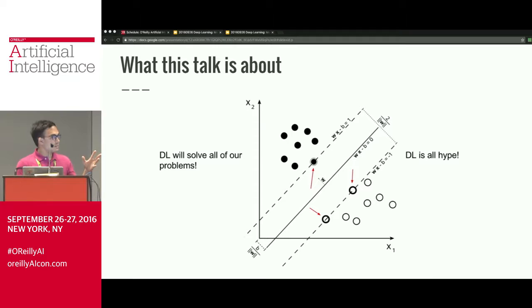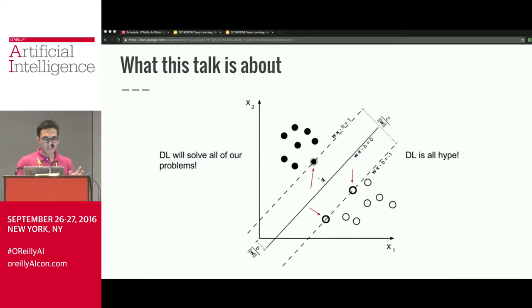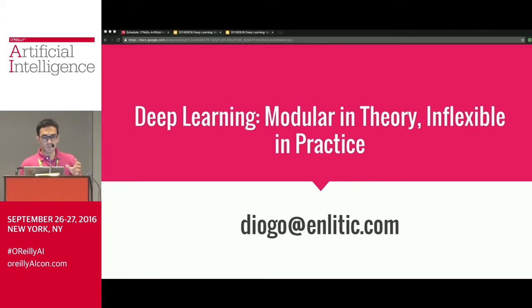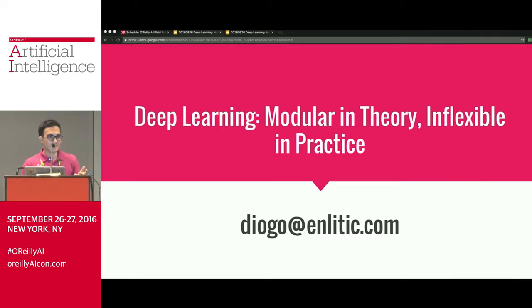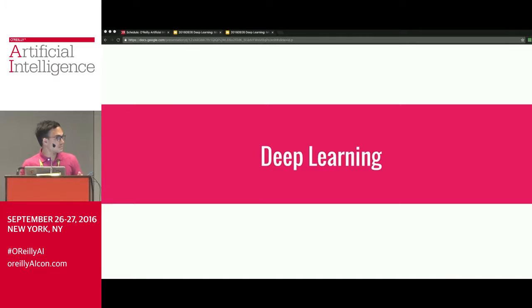I don't want to focus on the deep learning slam dunks all the way to the left or the impossible tasks on the right, but more on the evidence closest to the boundaries of showing what our current capabilities are — because that's where the interesting problems lie. By understanding just this subset of the field, you can have a pretty good approximation of how the rest of the space looks. Since most people I interact with are in the 'deep learning will solve everything' camp, I've made my talk 'deep learning: modular in theory and flexible in practice.' Feel free to ask questions at any time, especially if it sounds like I'm lying to you.